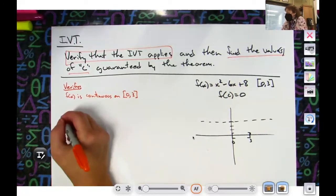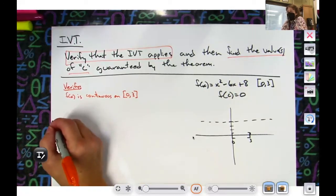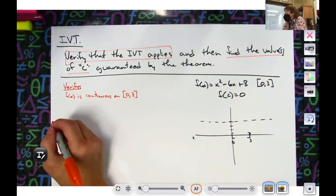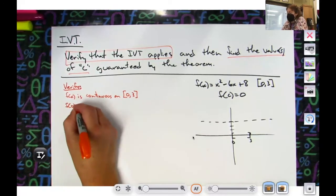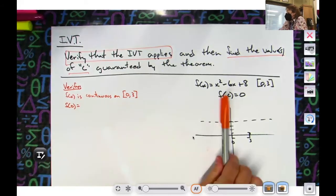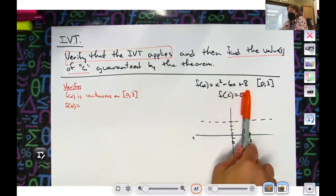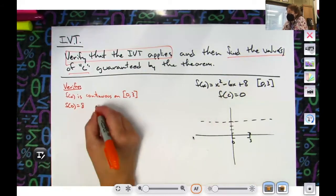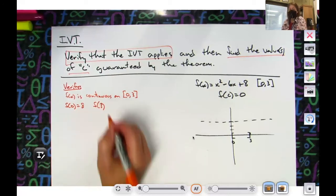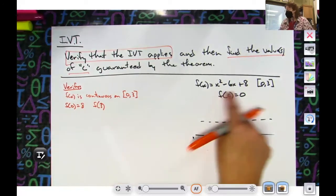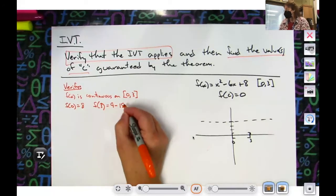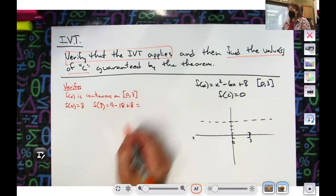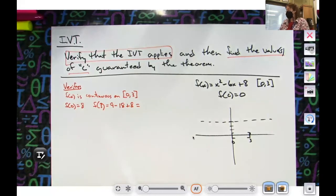Then the next thing to verify that the theorem exists, you would plug in zero, plug in three. Do the arithmetic, get that cranked out. Plug in zero—zero, zero—it's going to give me eight. And then I'm going to plug in three. That one might take a little bit more effort, so nine minus 18 plus eight—negative nine plus eight—negative one.